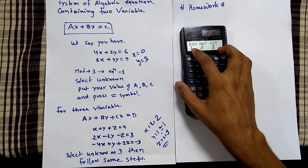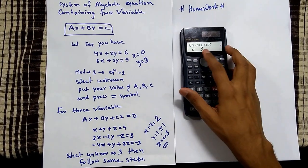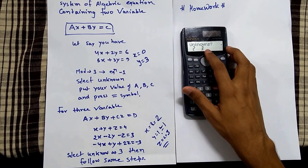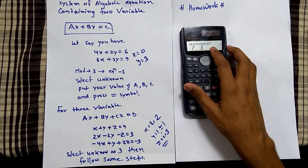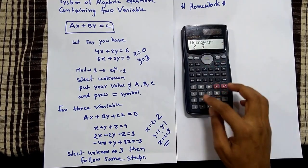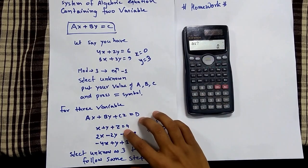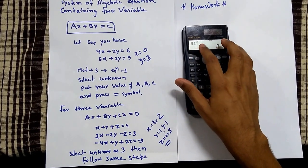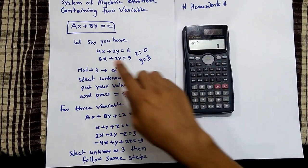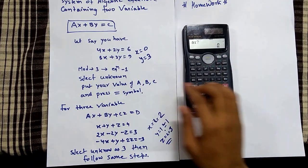Keep pressing until 'equation' appears on your display, then press 1. It will ask for unknowns — how many unknowns are in your equation. Since I am solving for 2 variables, I'll press 2. Then it will ask for the coefficients of your equation — the x coefficient and y coefficient respectively.